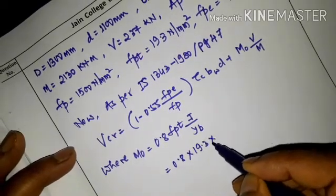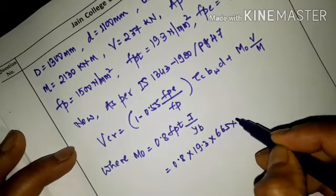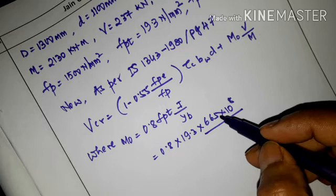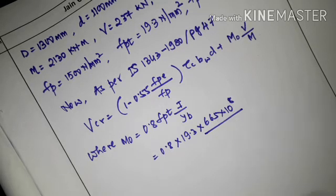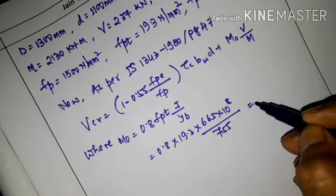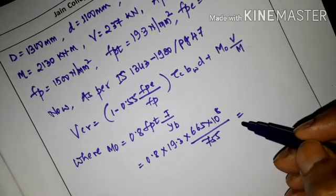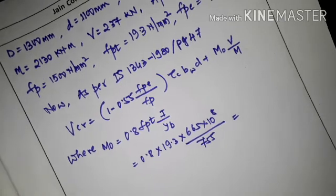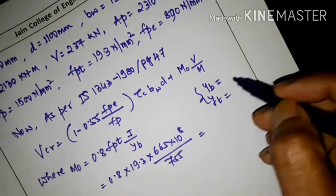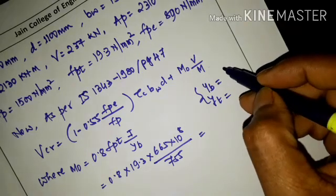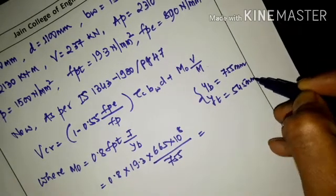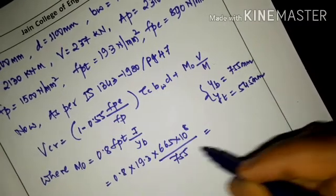To calculate M₀ (moment of decompression), we use M₀ = Fpt × I / yb. Fpt is given as 19.3 N/mm², the moment of inertia I = 665 × 10⁸ mm⁴, and yb (distance of centroid from bottom fibre) = 755 mm. yt = 545 mm and yb = 755 mm as given in the problem and also shown in the sketch.